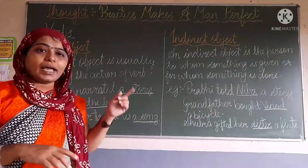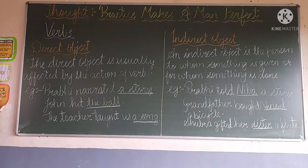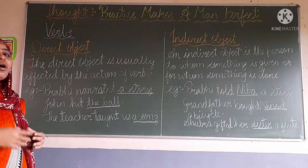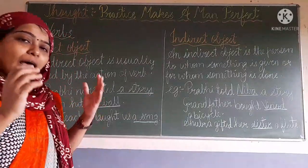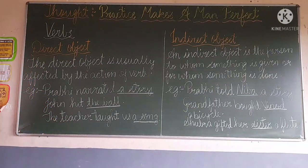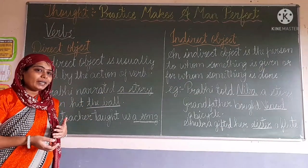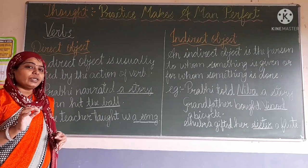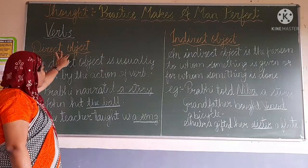First is direct object and indirect object. Now what is the meaning of direct object? A direct object is usually affected by the action of the verb. Like here I have given some examples. See, Prabhupada narrated a story. What did she do? She narrated a story. So a story is the direct object.